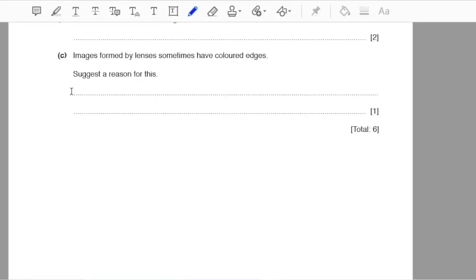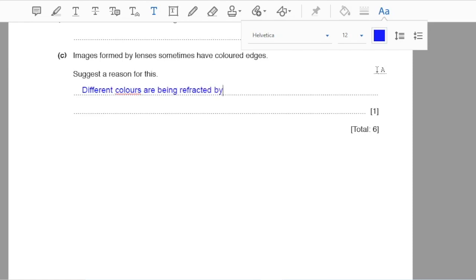Part c: images formed by lenses sometimes have colored edges. Suggest a reason for this. Different colors which are found in your object are being refracted by different angles and this will result in chromatic aberration.